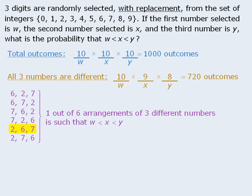We already determined that there are 720 outcomes where the three numbers are different, and we now know that one sixth of these outcomes are such that the three numbers are in ascending order. So the total number of outcomes where the three numbers are in ascending order will be equal to 720 divided by 6, which equals 120.